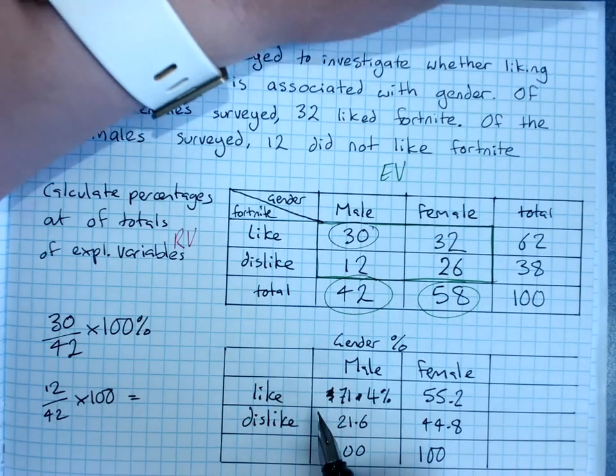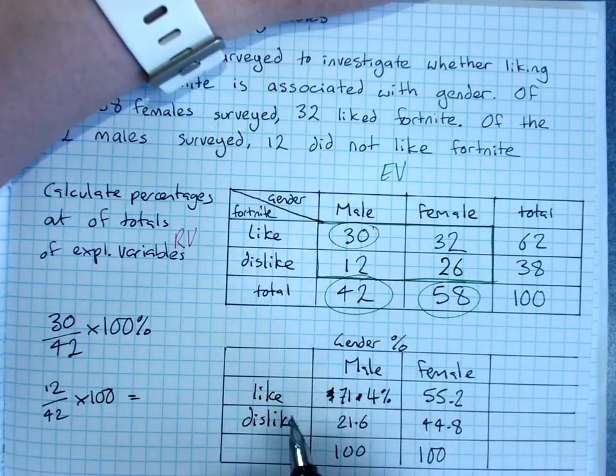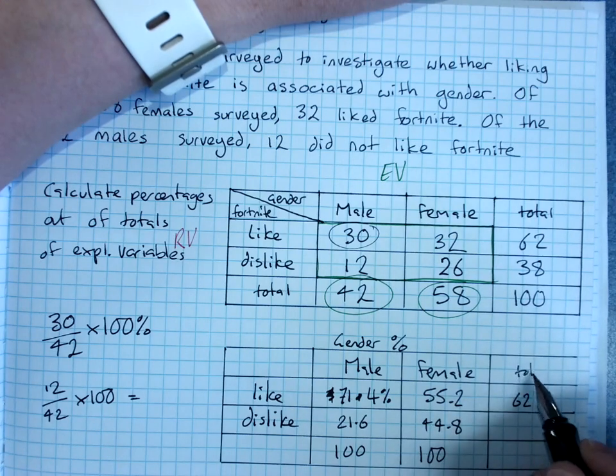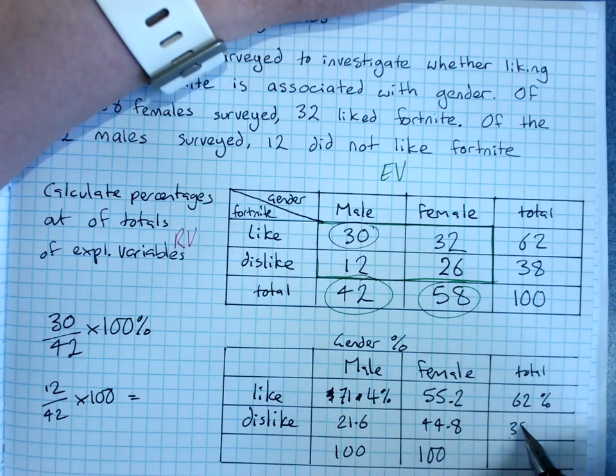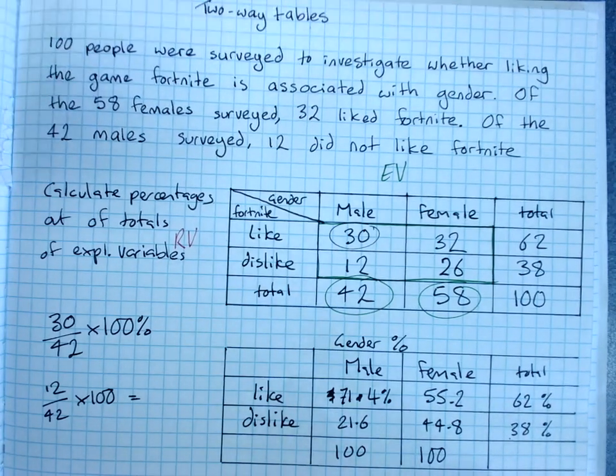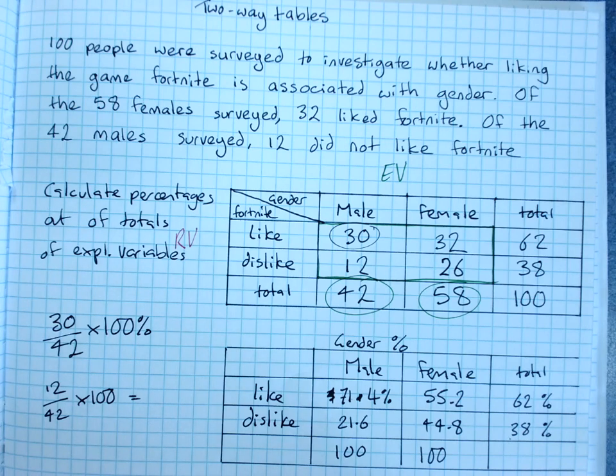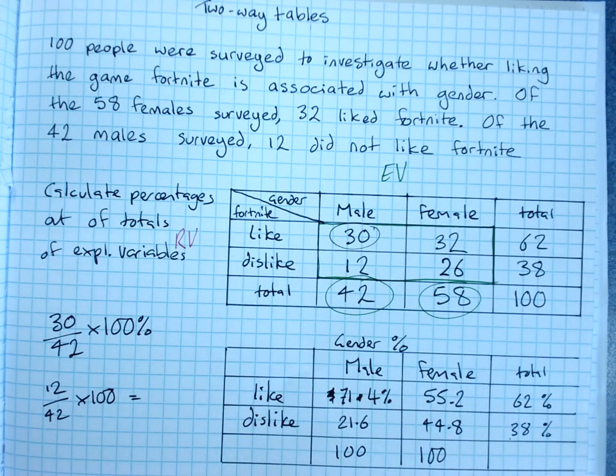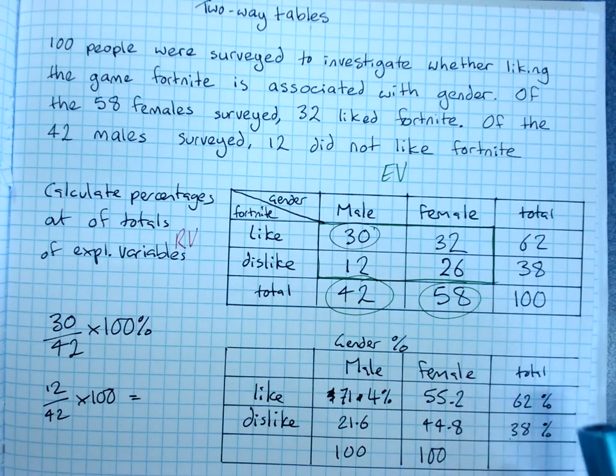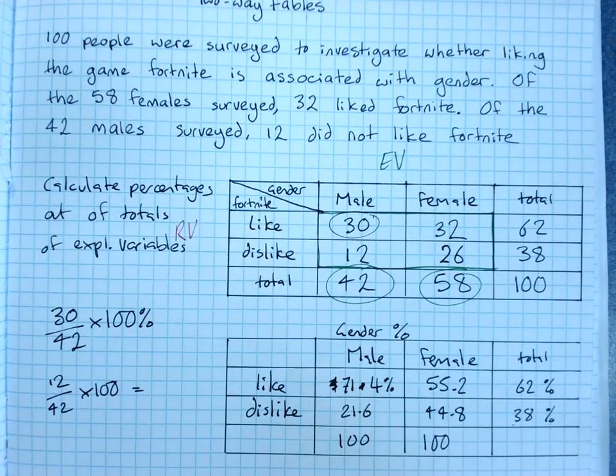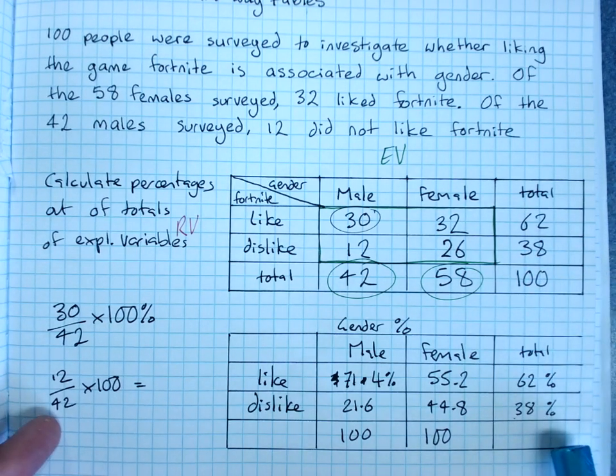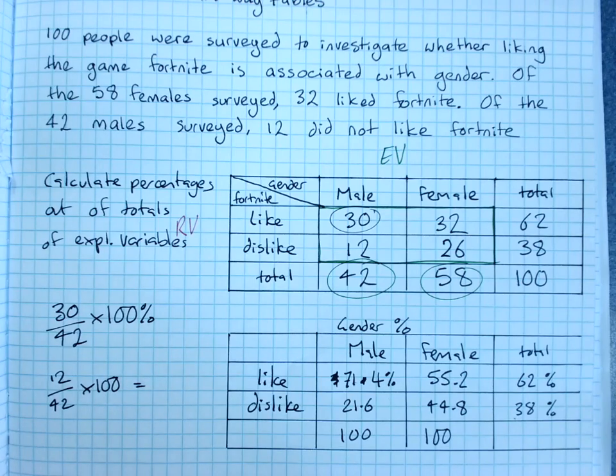You can add across to find the total percentage who liked it. That would be 62% who liked Fortnite and 38% all up, males and females, disliked Fortnite. So that tells us quite a lot. We can easily see that a higher percentage of males liked Fortnite than females, and a higher percentage of females disliked it than males. We can also see that overall, 60% of people liked it. So there's a lot of information there. So the skills we'll need are to be able to create a two-way table and a percentage two-way table, and then to interpret a percentage two-way table.